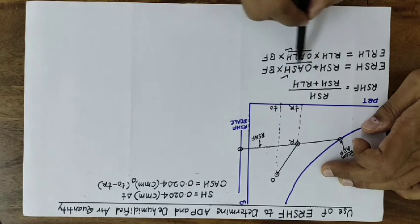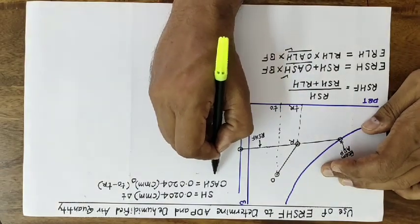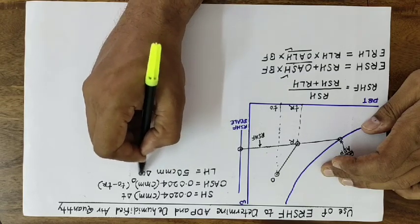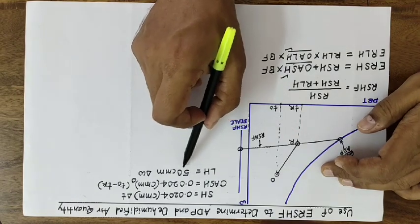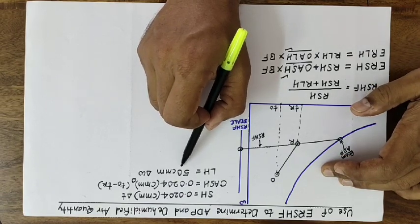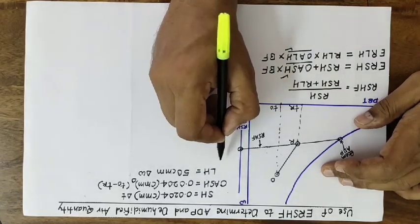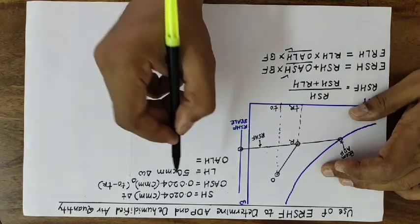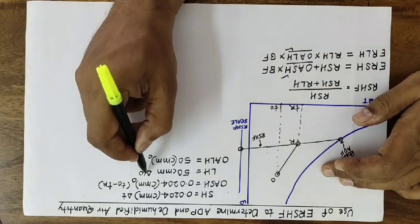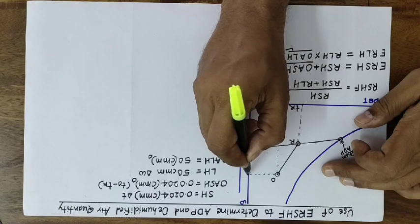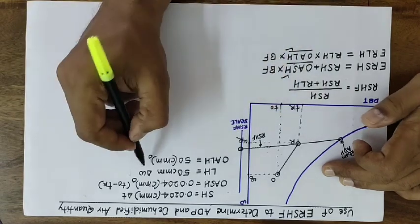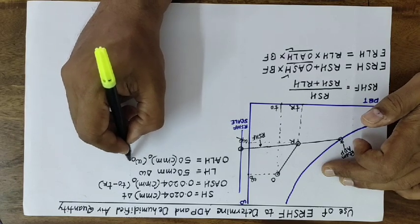Similarly, we have the latent heat formula: latent heat = 50 × CMM × Δω. The factor 50 comes from using average air density of 1.2 and the enthalpy of vaporization at the reference state of 0°C (approximately 2500 kJ/kg). The same formula is used for outside air latent heat: OALH = 50 × CMM_O × (ω_O − ω_R), where ω_O is the specific humidity of outside air and ω_R is that of room air.